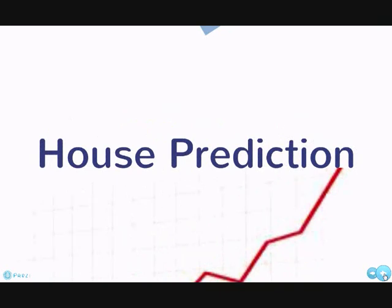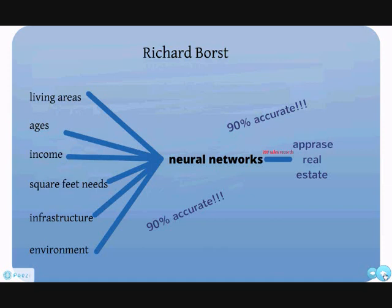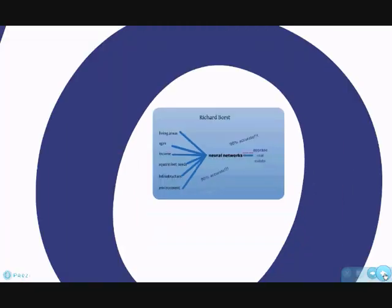Similarly, in the housing market, Richard Bost successfully trained a neural network to appraise real estate in the New York area. He incorporated 20 variables including square feet of living area, age, and so on, and used over 200 sales records to train neural networks that ultimately generated results with 90% accuracy.